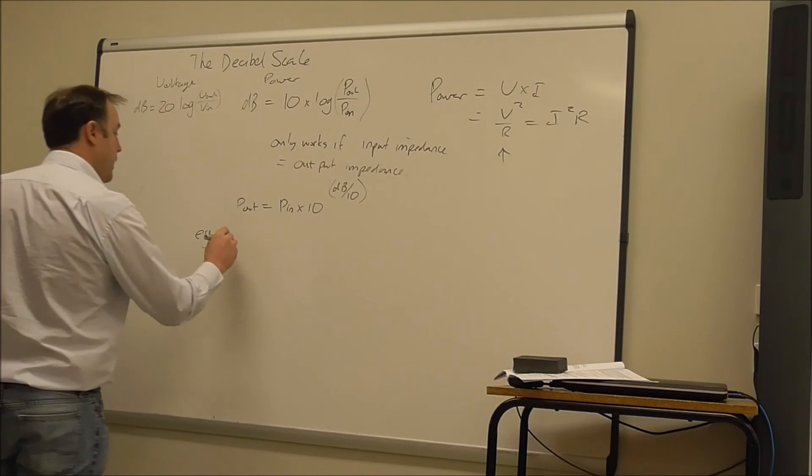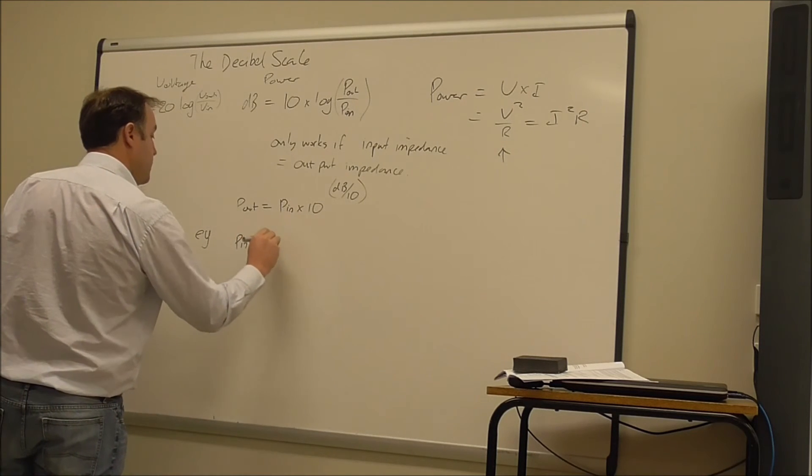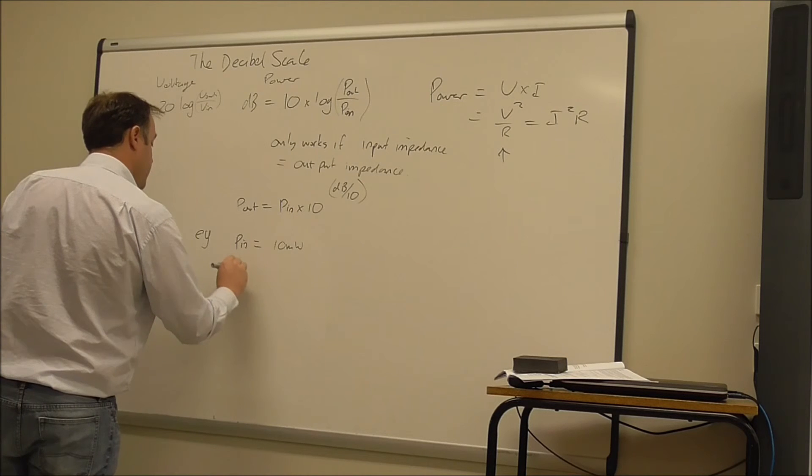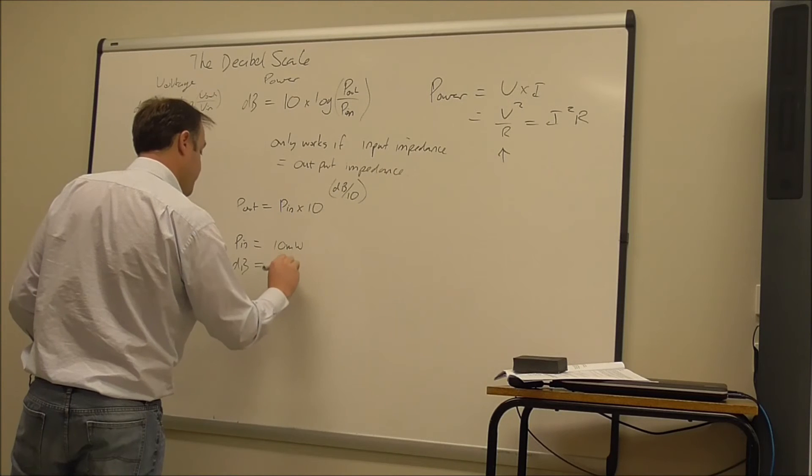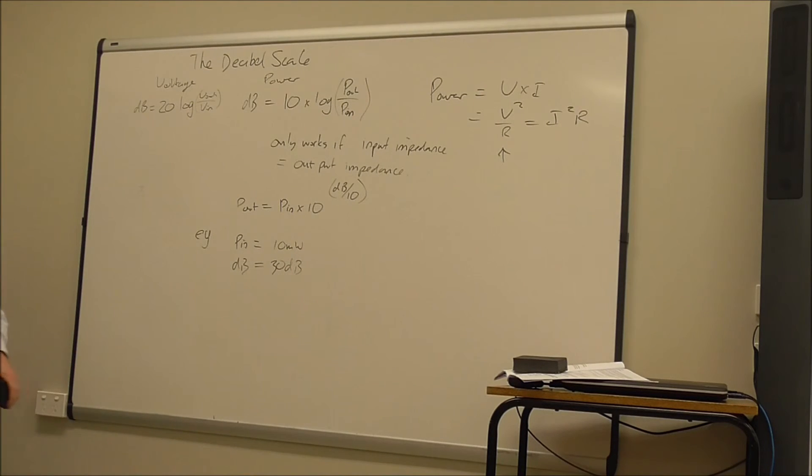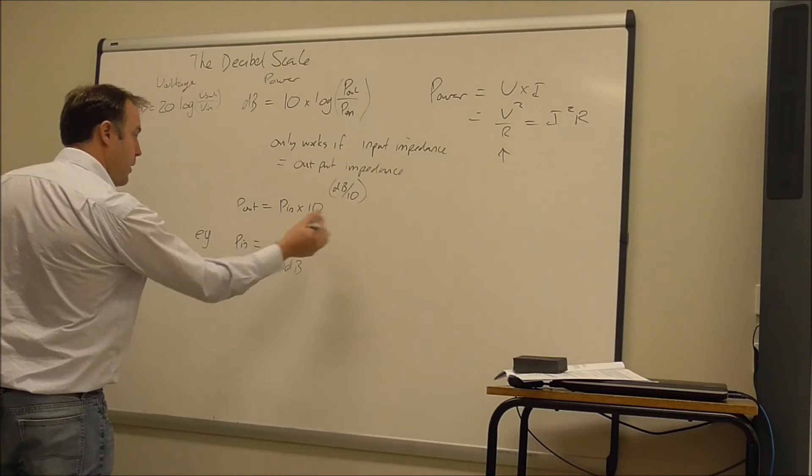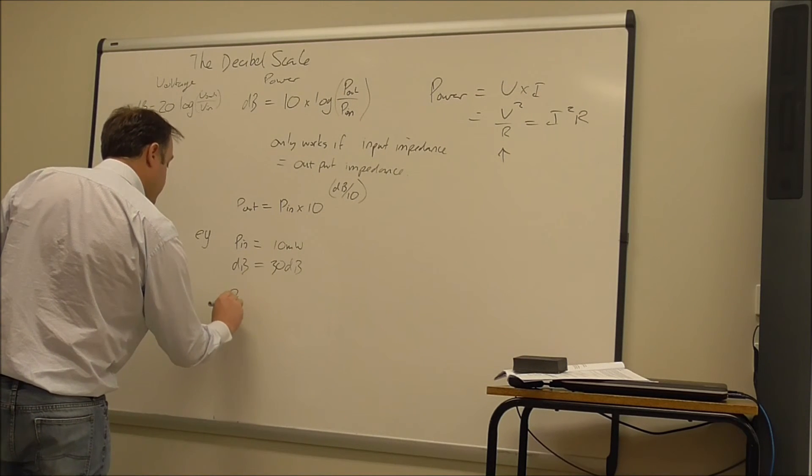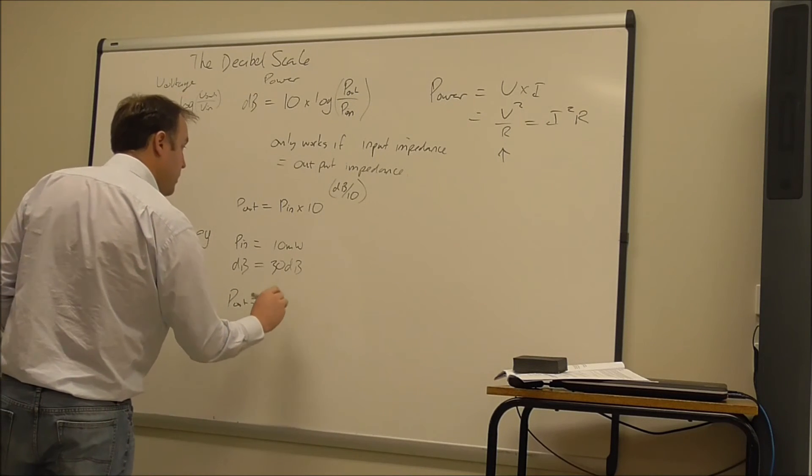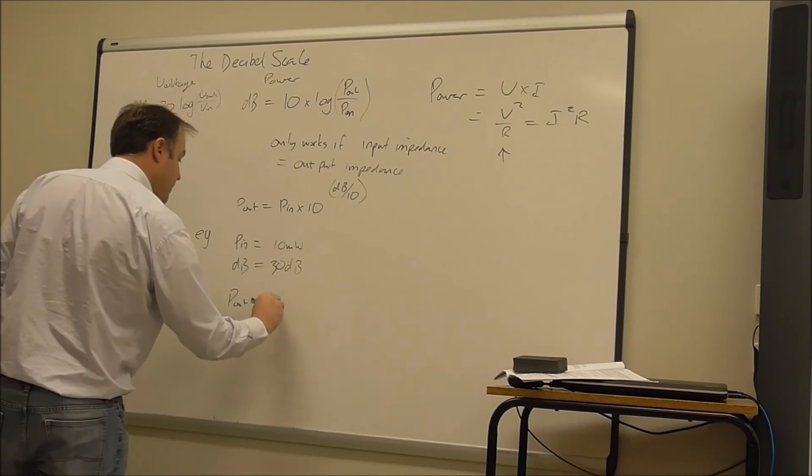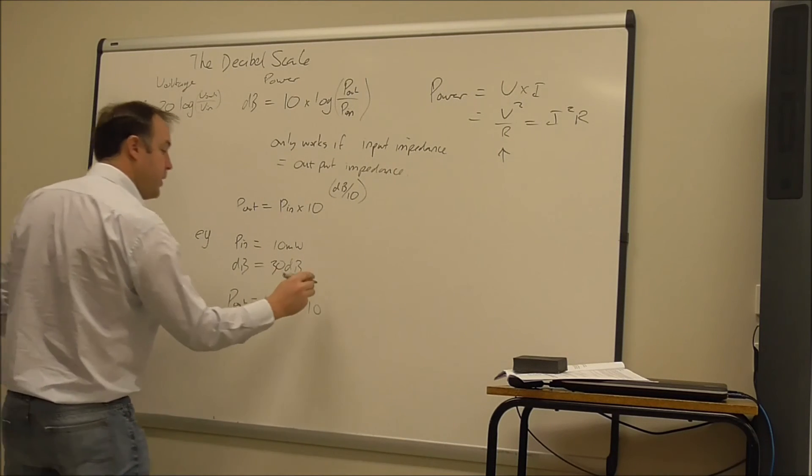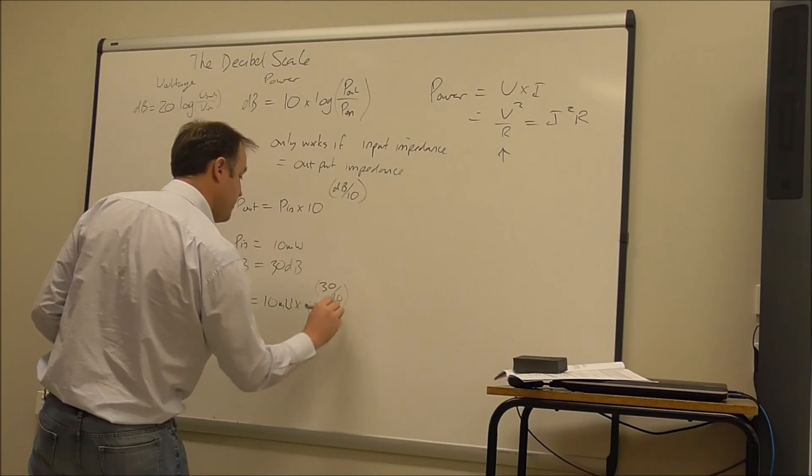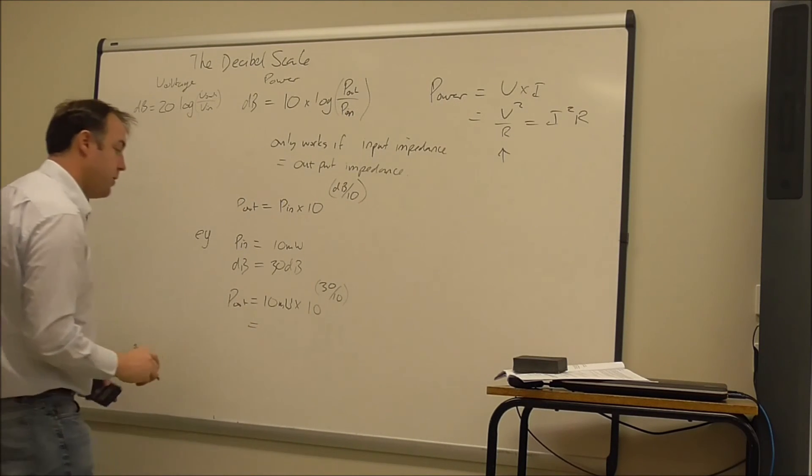And so an example would be P in is 10 milliwatts. And the gain is let's say 30 dB. A decent bit of gain there. So we've got P out equals 10 milliwatts times 10 to the power of 30 over 10, which is 10,000 milliwatts.